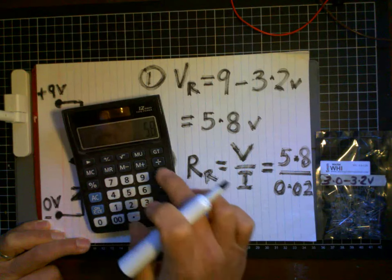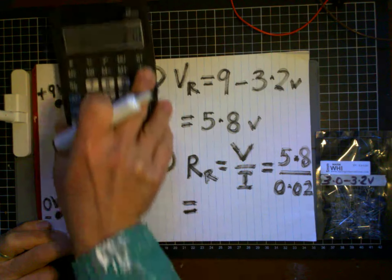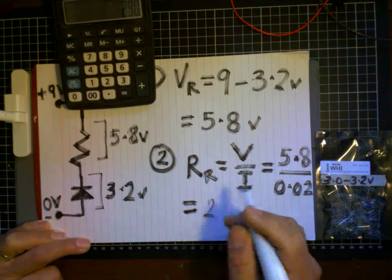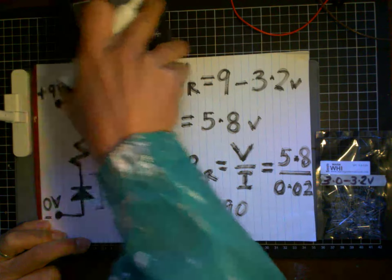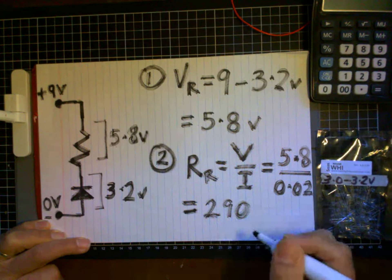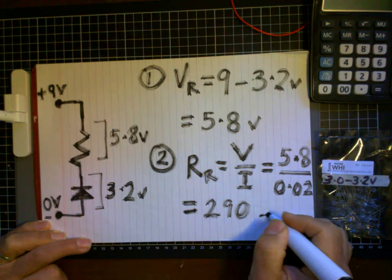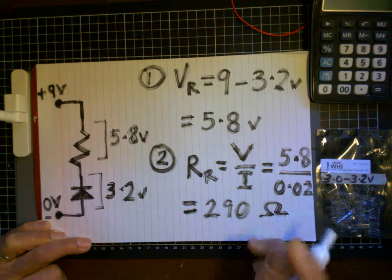So 5.8 divided by 0.02 equals 290 ohms. Therefore, when you go about building this circuit in series, you need a resistor with a resistance of about 290 ohms.